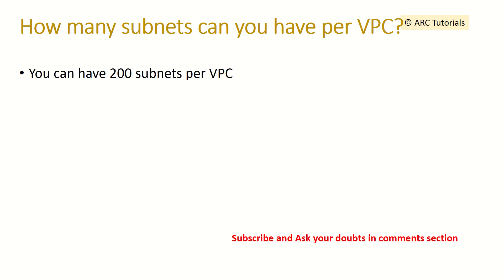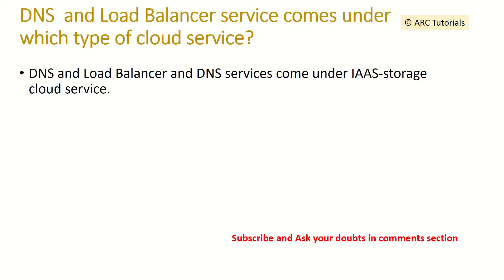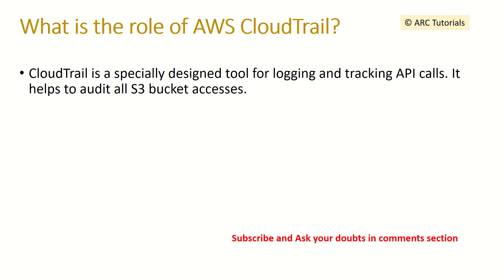How many subnets can you configure per VPC? We can configure up to 200 subnets per VPC. DNS and load balancer service come under which type of cloud service? DNS and load balancer come under IaaS, which is Infrastructure as a Service.